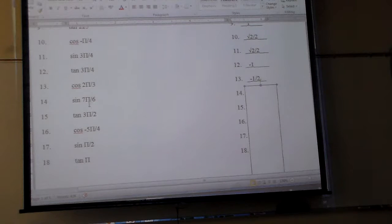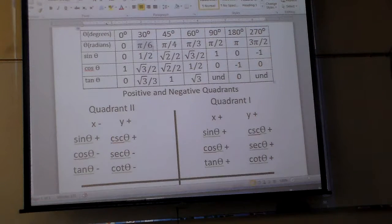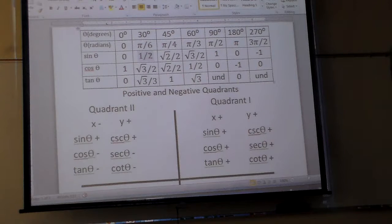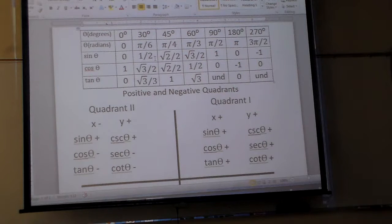Alright? So what's the alpha angle for sine 7π over 6? π over 6. We're doing sine. So sine at π over 6 is what? 1 half.